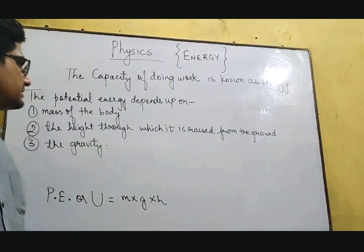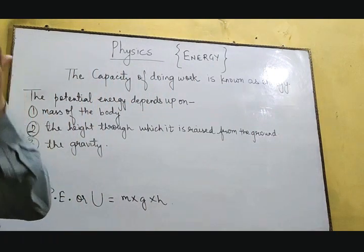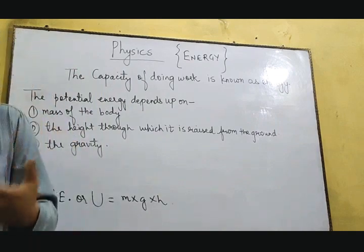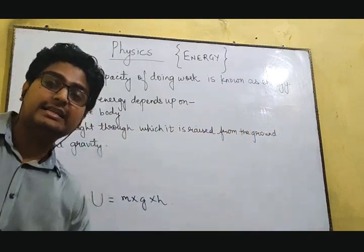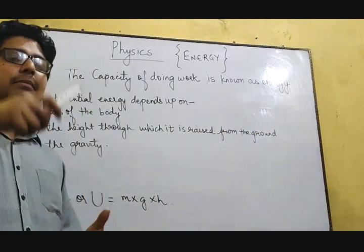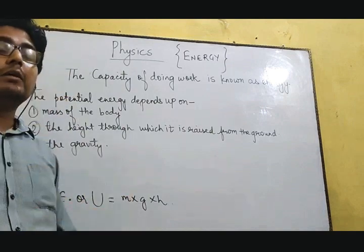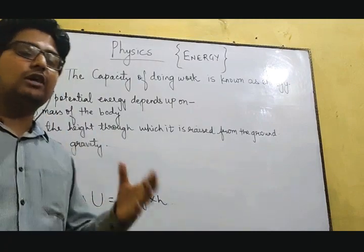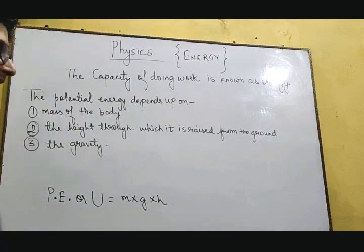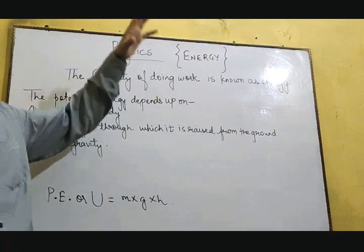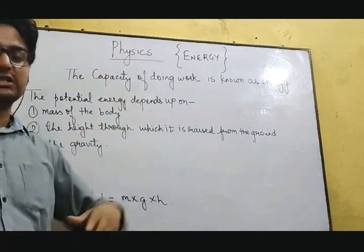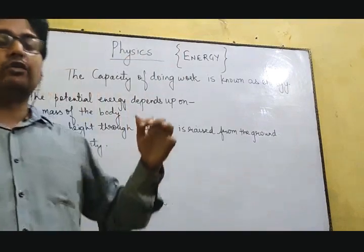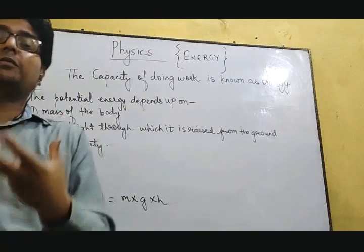The potential energy of a body depends upon: first, the mass of the body — bigger the mass, the more potential energy; smaller the mass, smaller the potential energy. Second, the height through which it is raised from the ground — more height means more potential energy, less height means less potential energy. For example with a hammer: raise it to a small height for small potential energy, raise it to a great height for large potential energy. Similarly, water falling from a great height will have a huge amount of potential energy. Third is gravity — the gravity of the Earth.